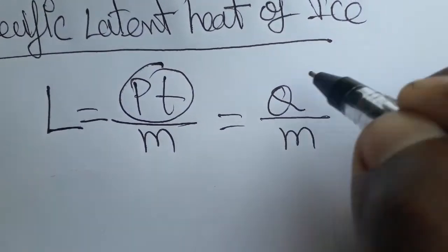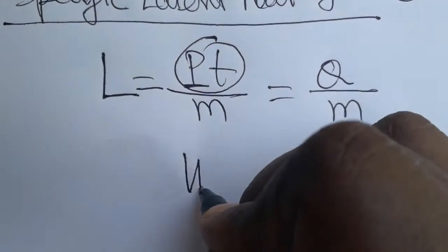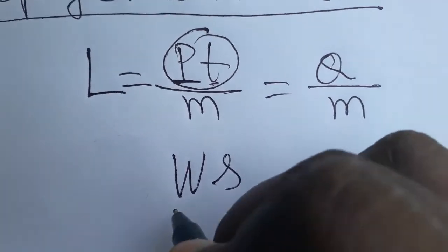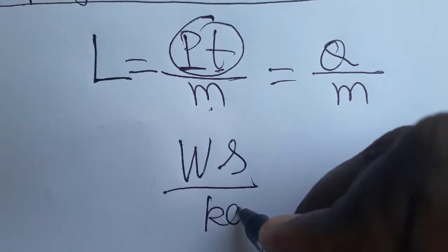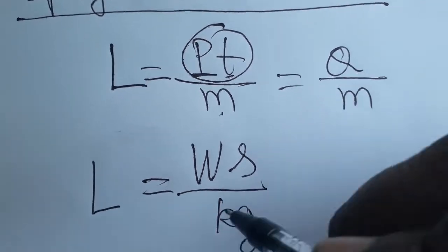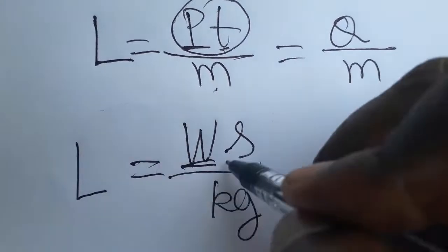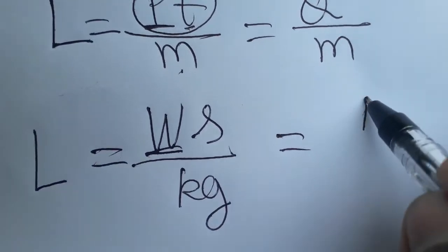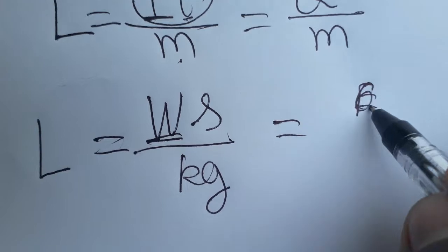We can take it as specific latent heat. So power SI unit will be watt, time SI unit will be second, divided by mass SI unit will be kg. That we are taking as specific latent heat. Power is energy by time, so energy by time, so joules.